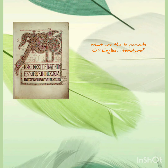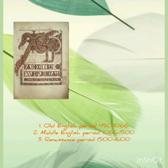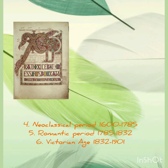What are the 8 periods of English literature? The most important periods are: Number 1, Old English or Anglo-Saxon period. Number 2, Middle English period. Number 3, Renaissance. Number 4, Neo-classical period. Number 5, Romantic period.